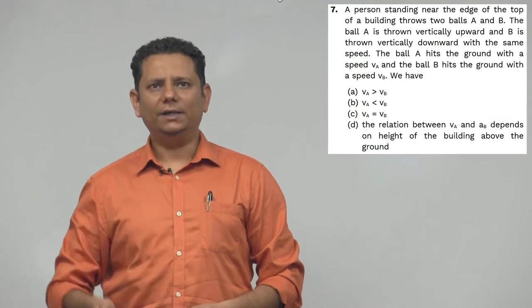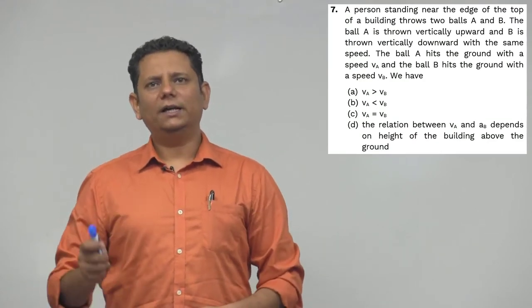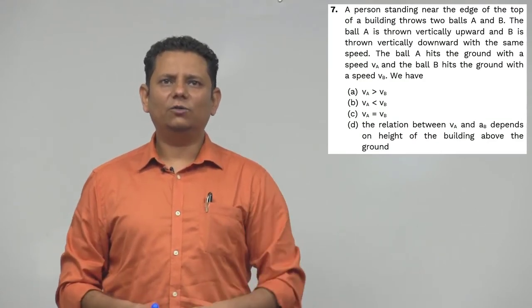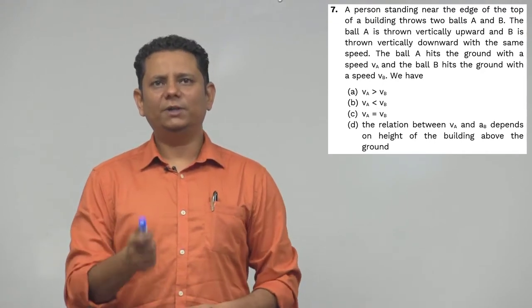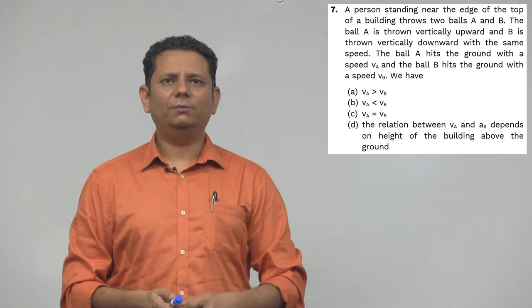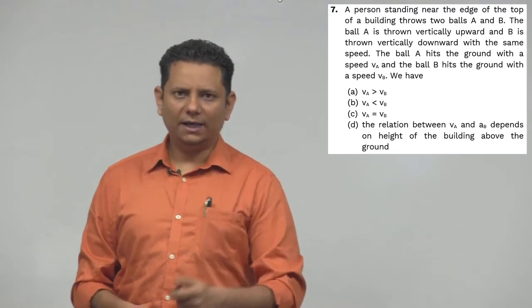The question says a person standing near the edge of the top of a building throws two balls A and B. Ball A is thrown vertically upwards and B is thrown vertically downwards with the same speed. The ball A hits the ground with speed va and B hits the ground with speed vb.